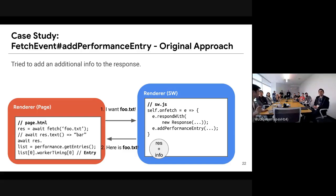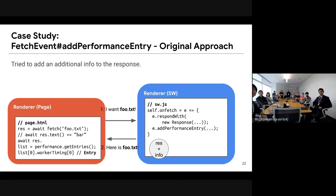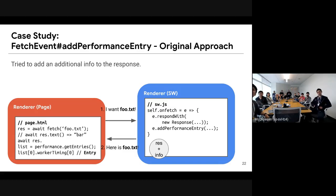At first we tried to add performance entry info directly in the response. The renderer asks the renderer for the service worker for foo.txt, and along with the response we added additional info about the performance mark, then responded with it. But you may already realize the issue.